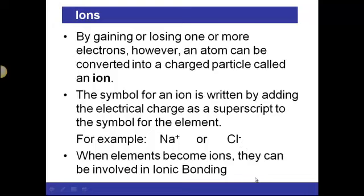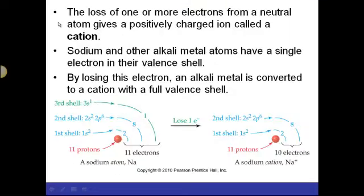When elements become ions, this is when they can be involved in ionic bonding. The loss of one or more electrons from a neutral atom gives a positively charged ion, and if the ion is positively charged, it's called a cation.